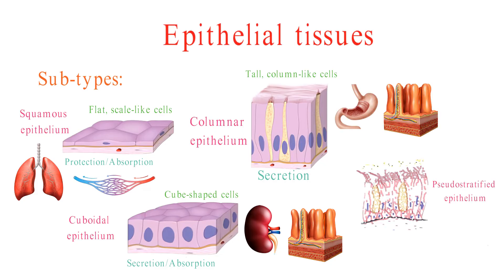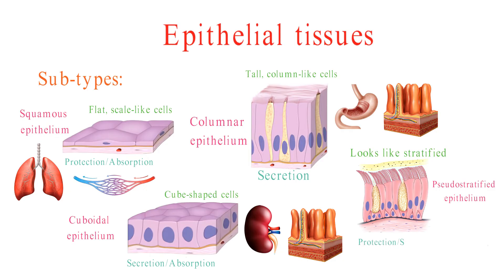Pseudostratified epithelium looks like it is stratified, but it is actually not. The cells are all connected at the base, but they vary in height. It is found in areas where there is a need for both protection and secretion, such as the lining of the respiratory tract.